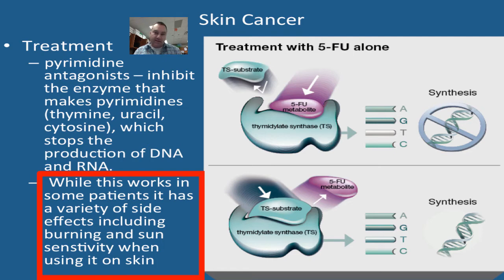A pyrimidine antagonist like 5-FU will work on some patients, but there are also some nasty side effects — not a surprise, since it's a type of chemotherapy.